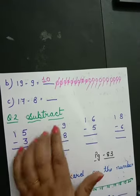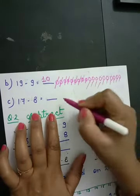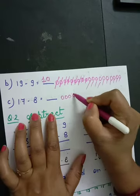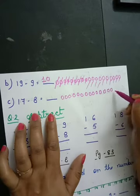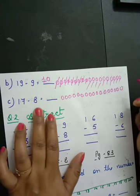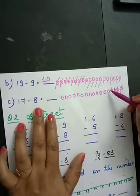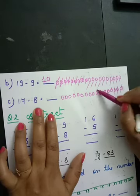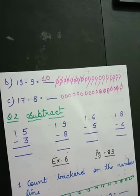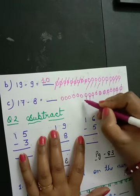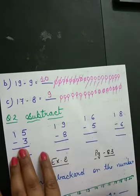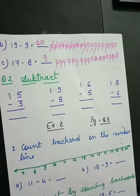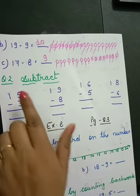Got it all of you? Seventeen minus eight: draw 1, 2, 3, 4, 5, 6, 7, 8, 9, 10, 11, 12, 13, 14, 15, 16, 17 boxes. Cut 8 boxes: 1, 2, 3, 4, 5, 6, 7, 8. How many boxes are left? Count: 1, 2, 3, 4, 5, 6, 7, 8, 9. Answer is nine.